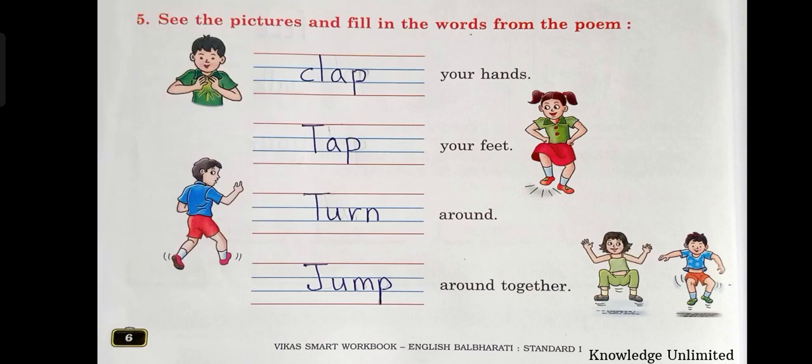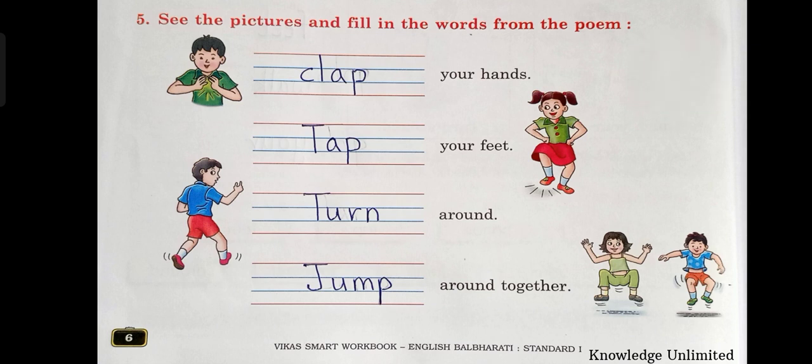Let's move forward now, children. See question number five — see the pictures and fill in the words from the poem. Can you see the pictures here? See what is that boy doing? He is clapping his hands, so we will write clap your hands — C-L-A-P. See the next picture. What is the girl doing? She is tapping her feet, so we need to write tap — T-A-P — tap your feet.